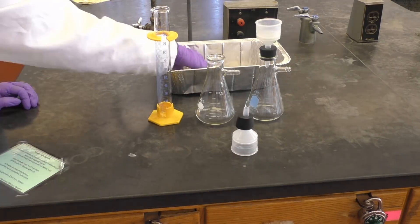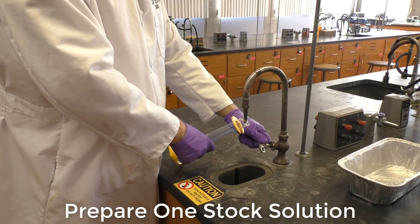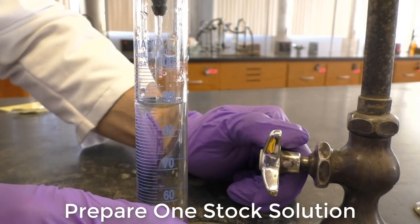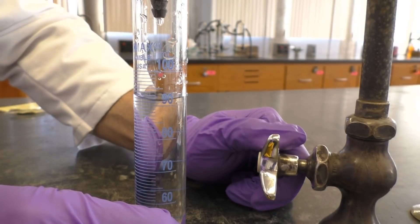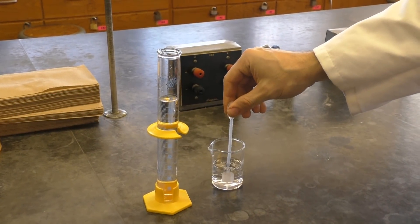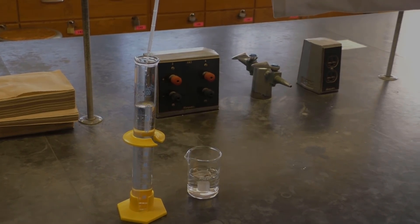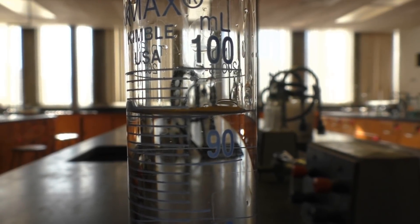First you will need to prepare one stock solution for both you and your partner to share. Using the unknown, carefully measure out 96.2 milliliters of DI water in your 100 milliliter graduated cylinder. Obviously there is no line for exactly 96.2, but just try your best to be accurate. Then add this water to your 250 milliliter Erlenmeyer flask.